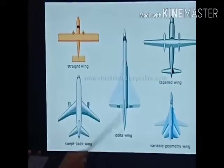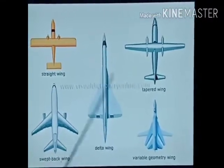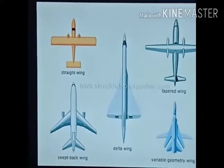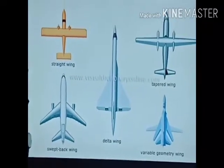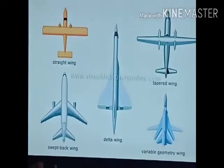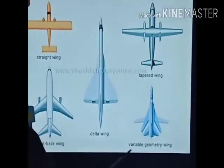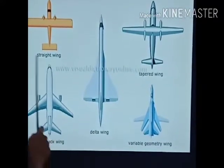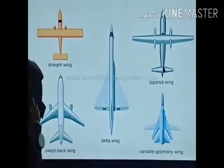The LCA Tejas has a delta wing configuration. The IL-76 and IL-78 aircraft have swept back wings, as seen on commercial aircraft. The Bahadur aircraft MiG-27 had a variable geometry wing and was retired in December 2019. There is also the tapered wing and the straight wing, which is completely straight - these are the different classes of wing shapes.